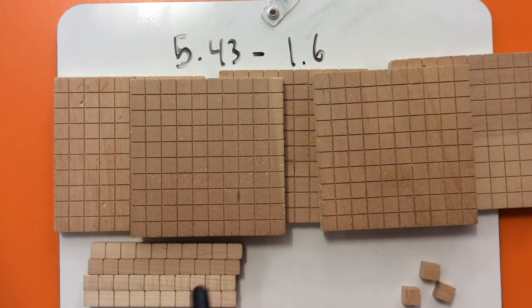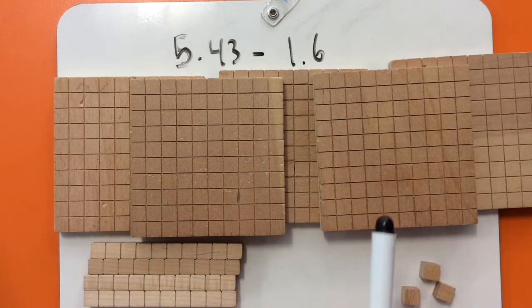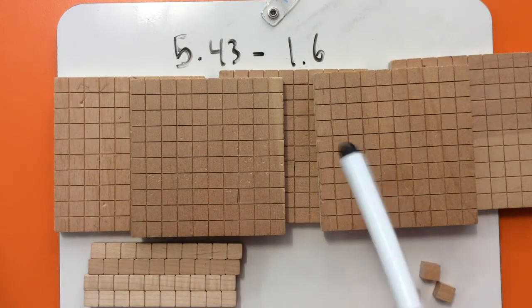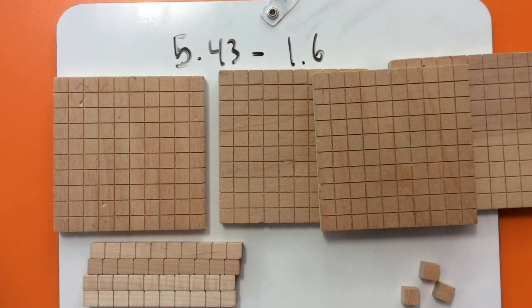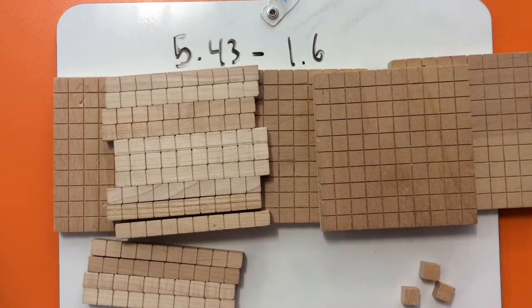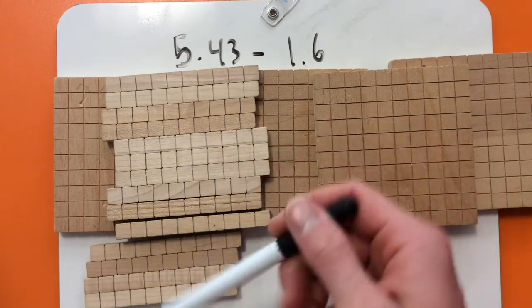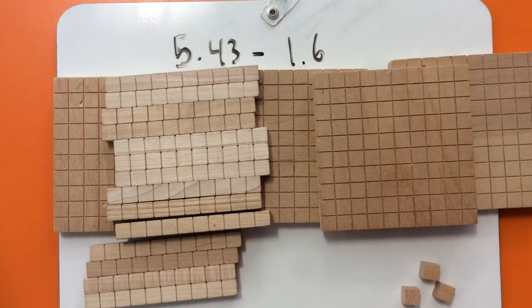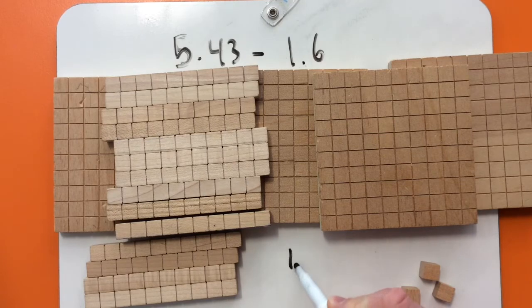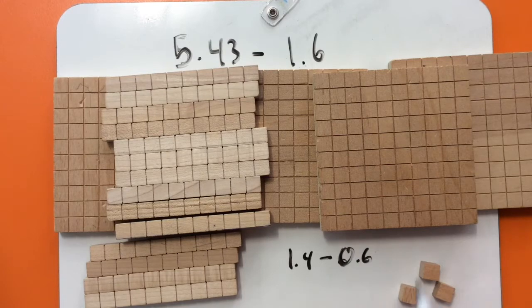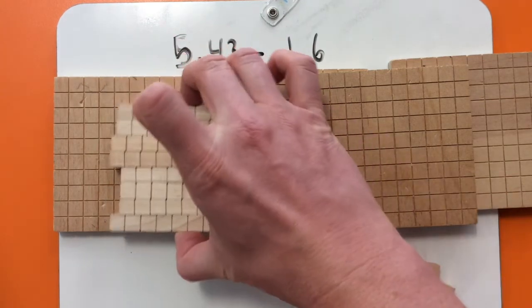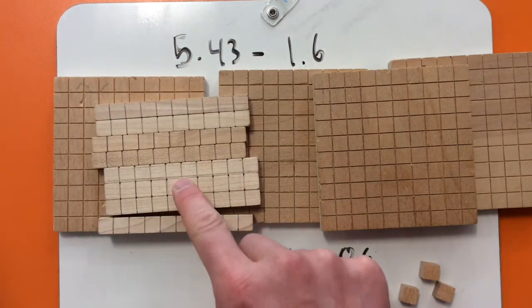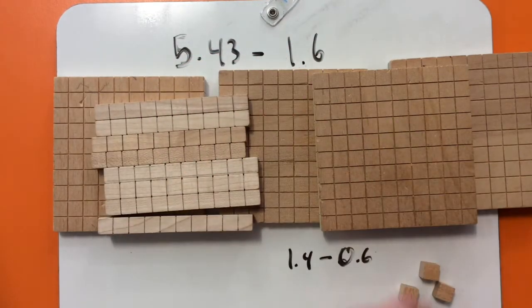Next thing is, I've got 4 tenths, and I'm taking away 6 tenths. But I can't do that, so I need to take one of these ones, and exchange it for 10 tenths. So now I've got 4 tenths, and 10 tenths, 14 tenths. So that's 1.4, take away 0.6, so 6 tenths. So there's 5, 6, and those are gone. So I have left 1, 2, 3, 4, 5, 6, 7, 8. 8 tenths.